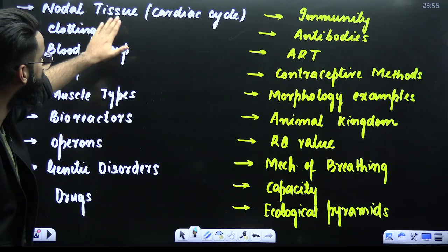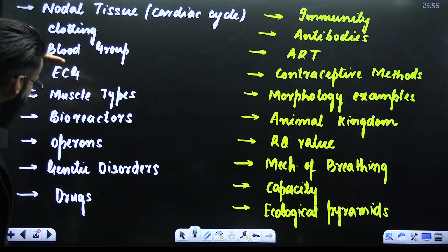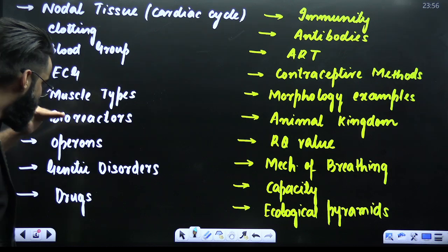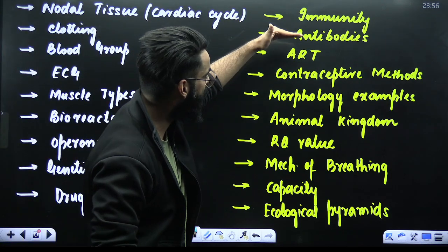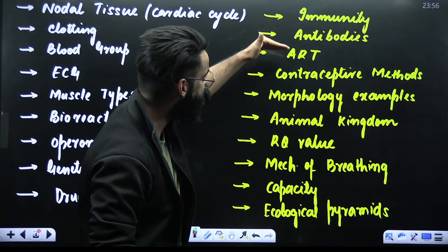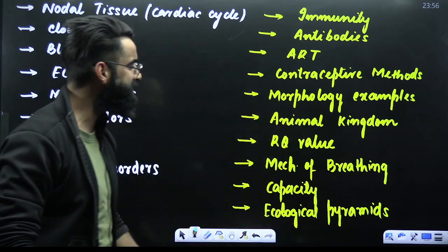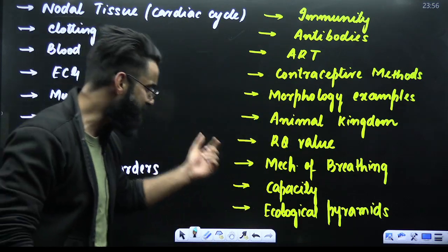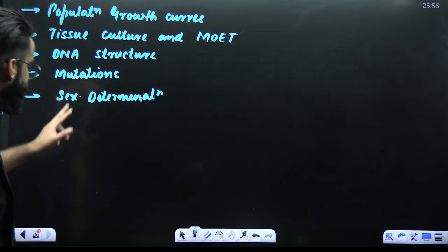You have got nodal tissue, cardiac cycle, clotting, blood group, ECG, muscle types, bioreactors, operons, genetic disorders, drugs, immunity, antibodies, ART, contraceptive methods, morphology examples, animal kingdom, RQ value, mechanism of breathing, lung capacity, and ecological pyramids.